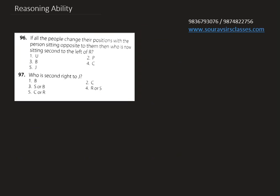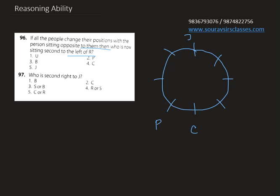Now let's see the next question. If all the people change their positions with the person sitting opposite to them, then who is now sitting second to the left of R? After the swap, the arrangement looks like: J, C, B, U, R, S, P, Q. The direction of J is facing outward, for C it is toward the center, then opposite side, center, opposite, center, center.